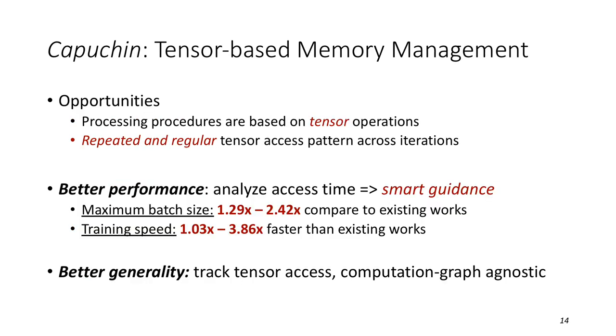We propose Capuchin, which makes memory management based on tensor. The intuition is simple. First, the processing procedure in deep learning frameworks are all based on tensor operations. Second, the tensor access exhibits repeated and irregular patterns across iterations. Then we can get smart guidance through analyzing the tensor access pattern. Specifically, we achieved 1.29 to 2.42 times maximum batch size improvement compared to existing methods, and 1.03 to 3.86 times training speed improvement. Also, our method is computation graph agnostic that can both work for declarative and imperative deep learning frameworks.